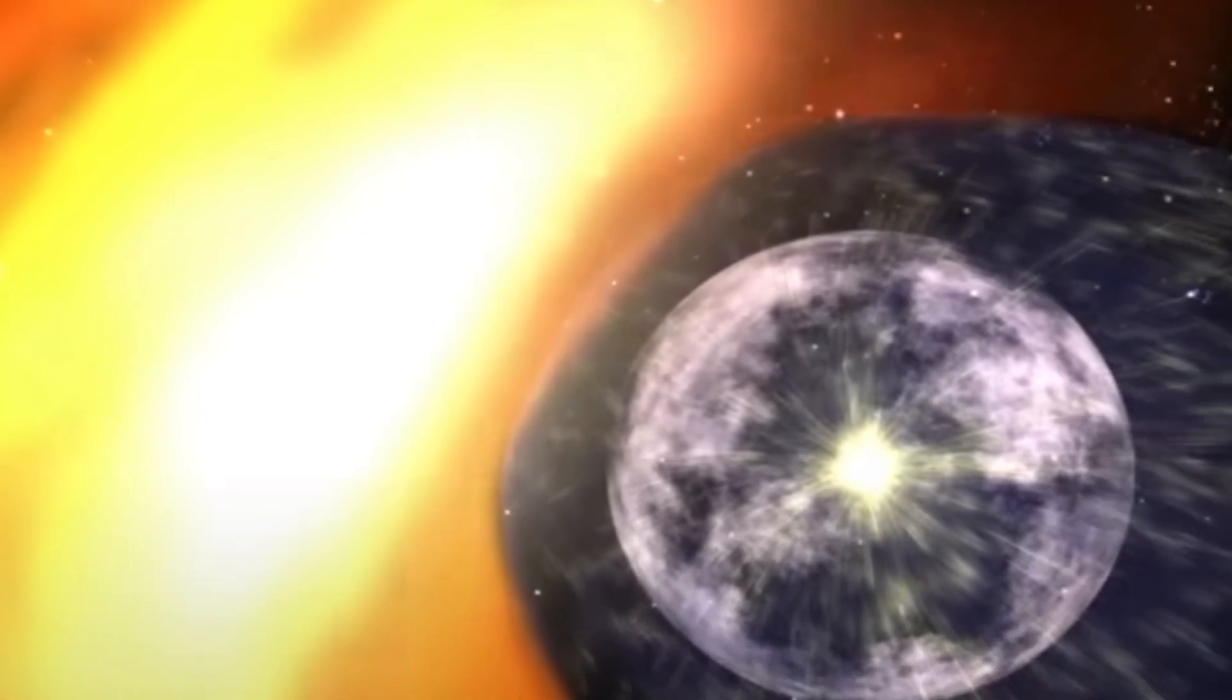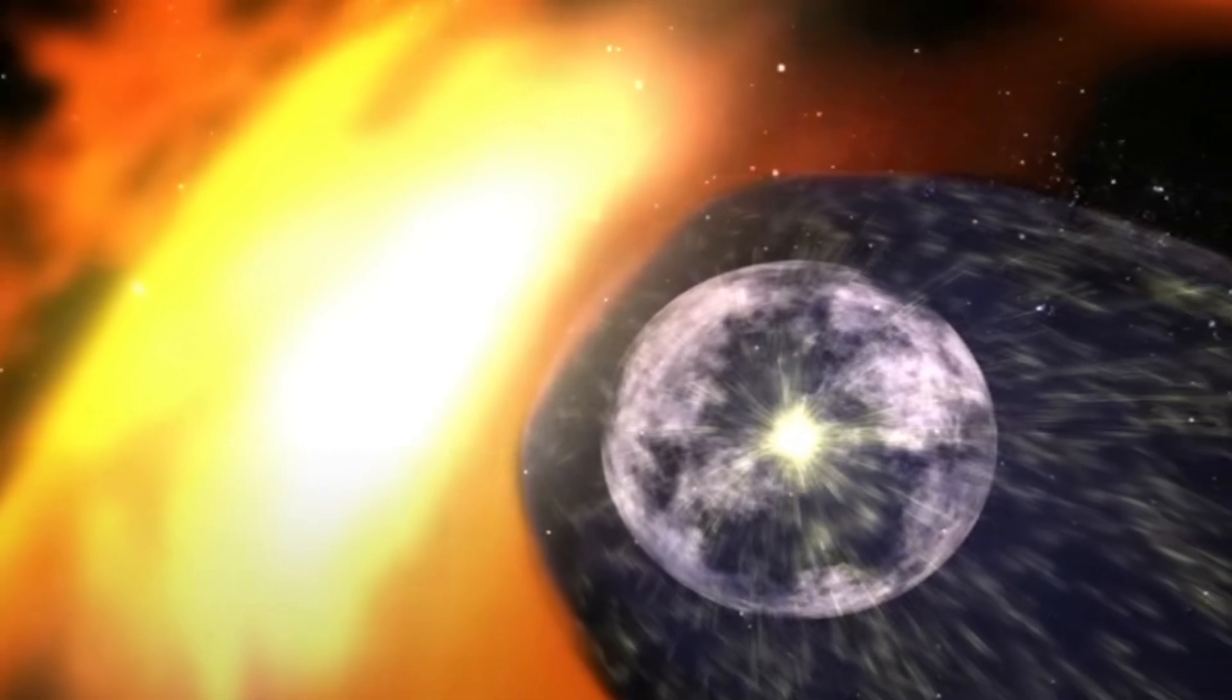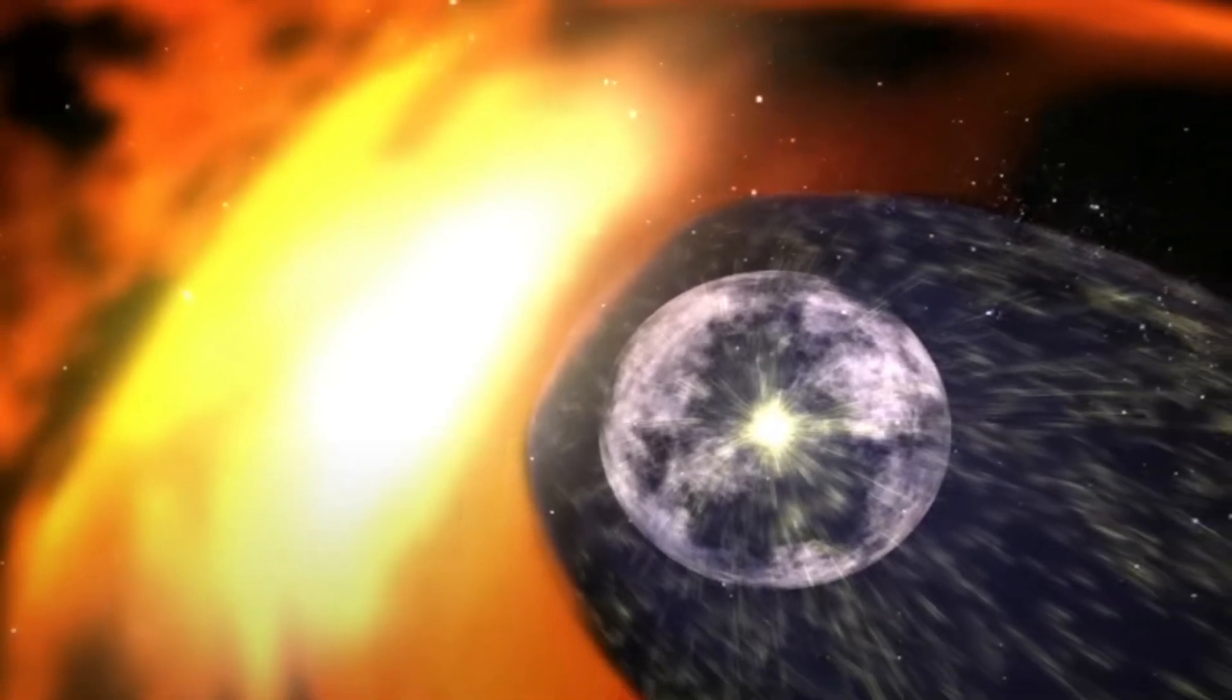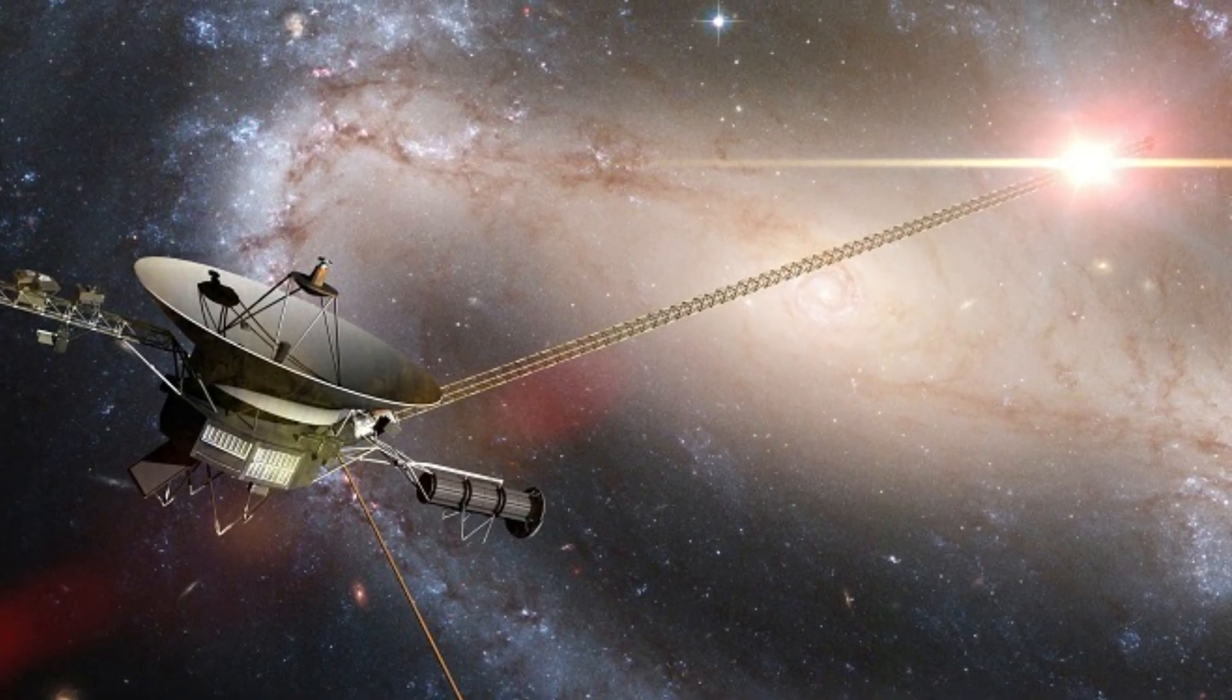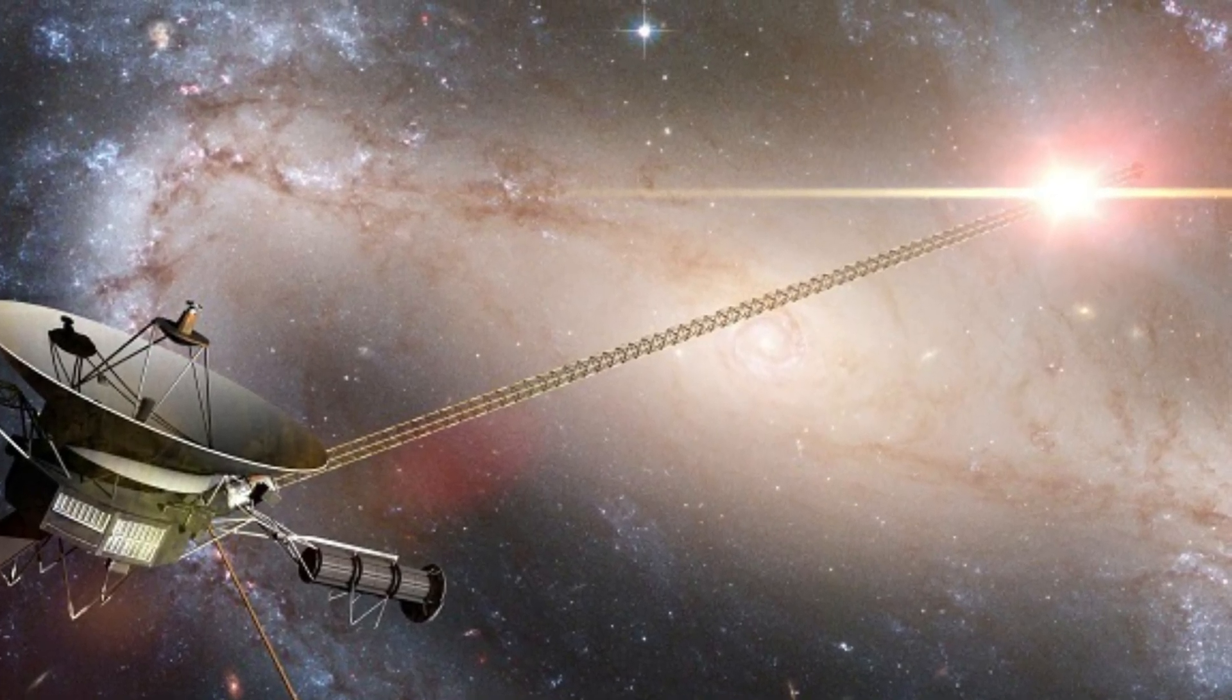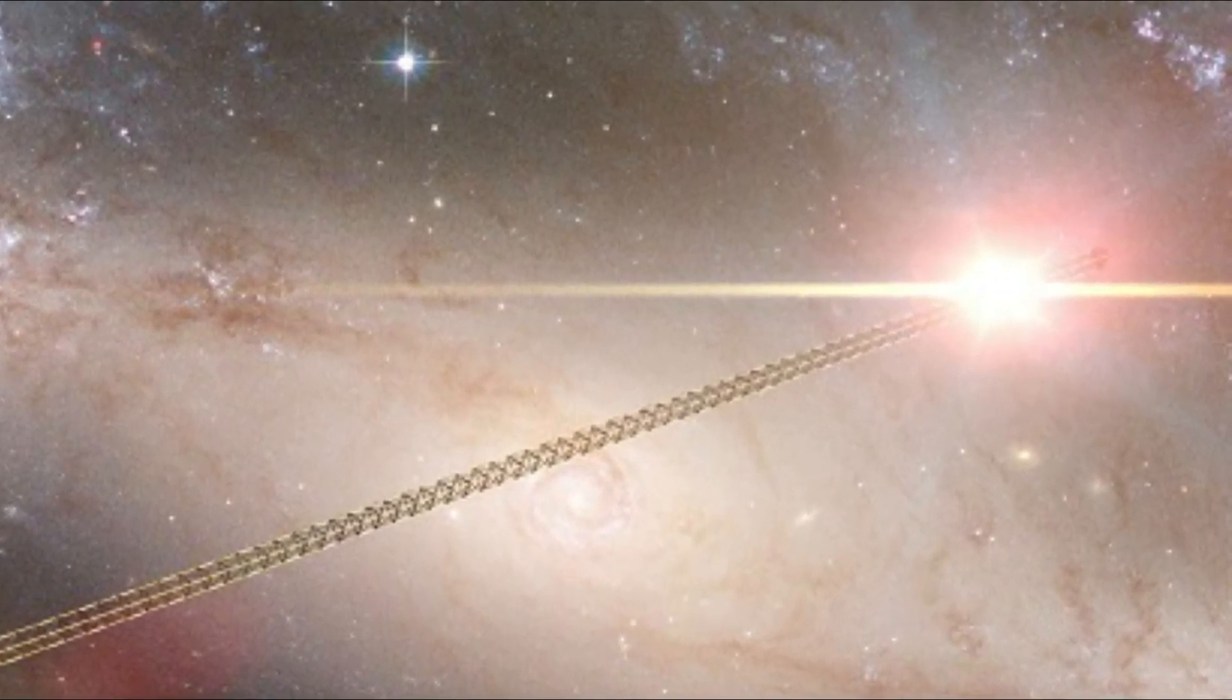The Wall of Fire isn't a solid structure as its name might suggest, but rather a region of intense plasma turbulence where two cosmic forces collide. On one side flows the solar wind, a constant stream of charged particles ejected from the Sun at speeds reaching nearly a million miles per hour.